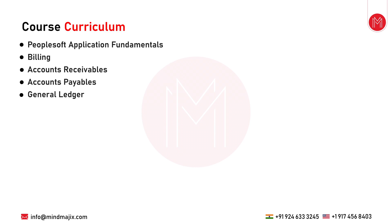The third topic is Accounts Receivable. The Accounts Receivable topic covers the creation of items and the payments received from customers, as well as any other generic payments referred to as direct general payments. It also contains dunning, which is a term for sending notifications to customers for payments.